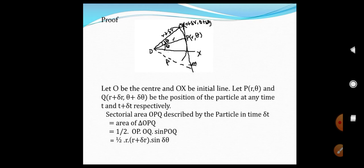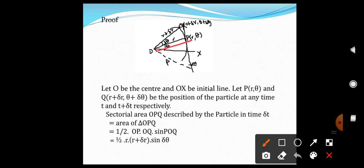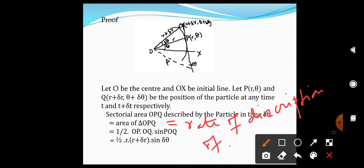Next, we will find the sectorial area. The sectorial area of OPQ described by the particle in time δT must be equal to the area of triangle OPQ. The area of triangle OPQ equals one-half times OP times OQ times sin(POQ), which equals one-half times R times (R + δR) times sin(δθ). The rate of description of the sectorial area is then this area divided by δT.